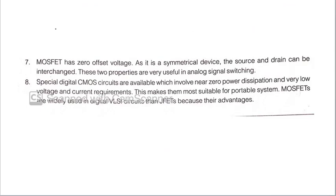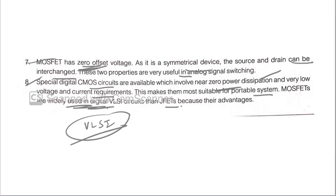Seventh point, MOSFET has zero offset voltage. This is very important. It has zero offset voltage. It is a symmetrical device. The source and drain can be interchanged. These two properties are very useful in analog signal switching. Last point, in the difference of JFET and MOSFET, CMOS circuits are nowadays available, which involve near zero power dissipation. They have zero power dissipation and very low voltage in current requirement. This makes suitable for portable system. MOSFETs are widely used in VLSI, very large scale integration circuits. Therefore, we are using MOSFETs nowadays everywhere because of many advantages that it has low power dissipations, high input impedance. These are some of the advantages like signal to noise ratio is very high.